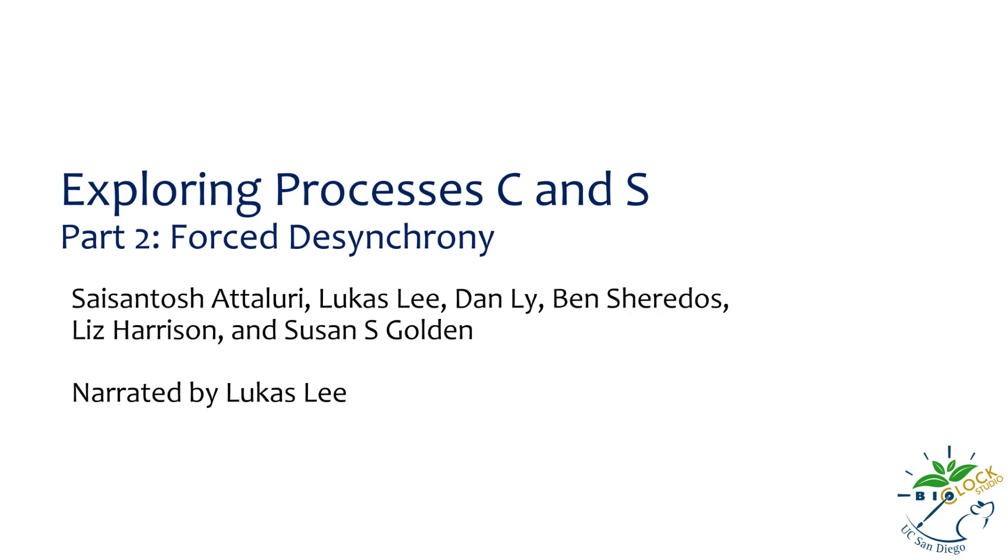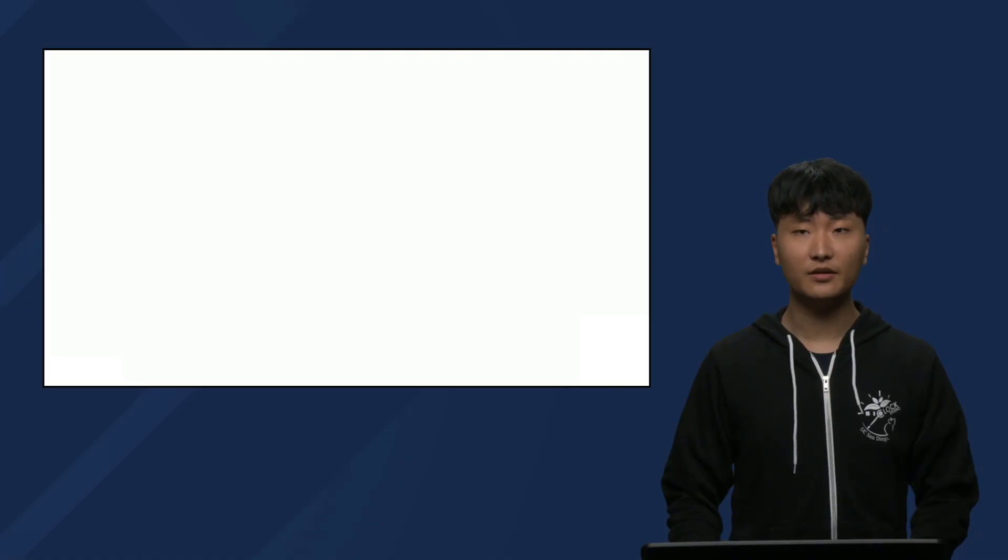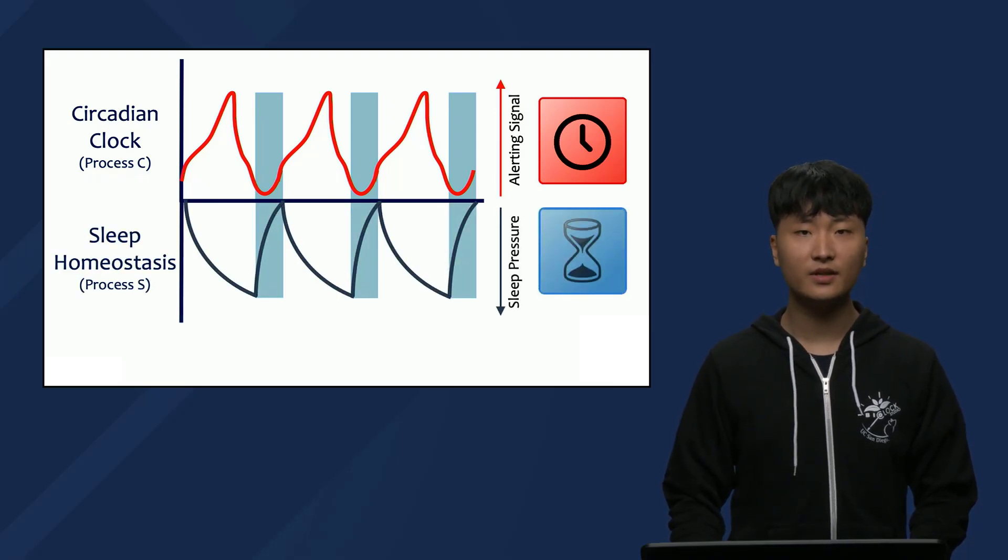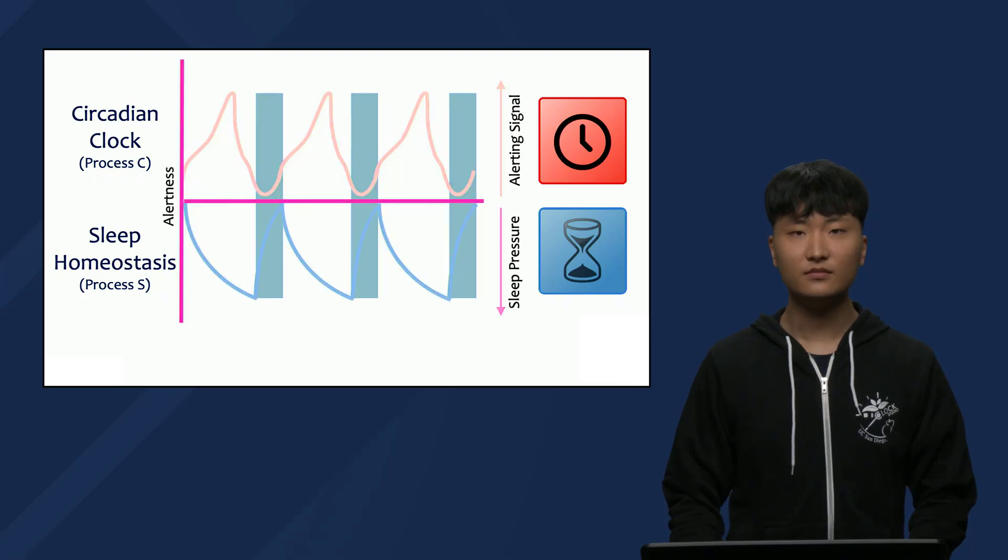In this second video in a two-part series, we are exploring how scientists measure processes C and S. As a reminder, process C is a circadian rhythm in alertness, or its opposite, sleepiness, and process S is a homeostatic or sleep pressure system. Together, they help determine when you're alert and when you sleep.